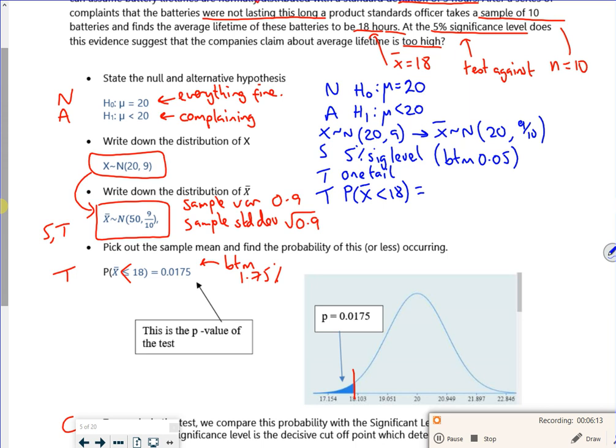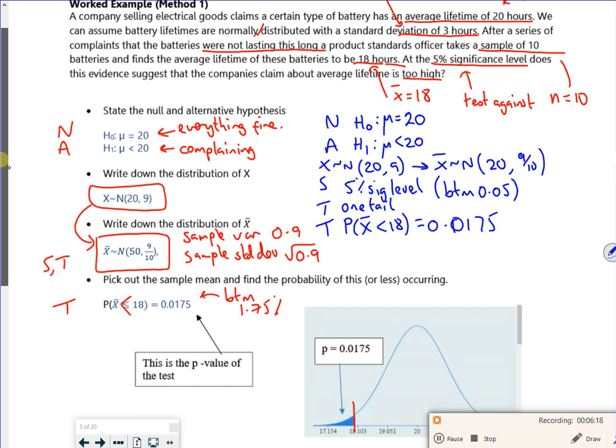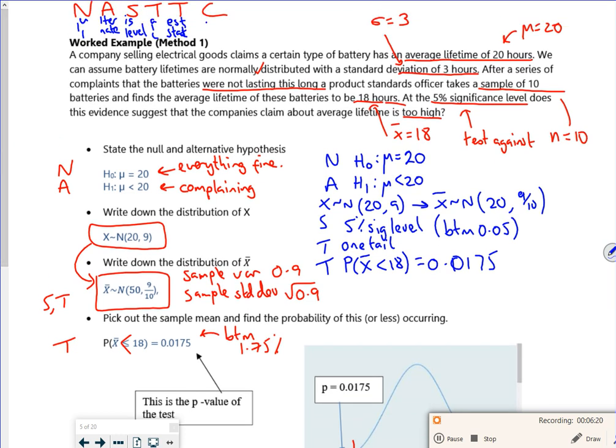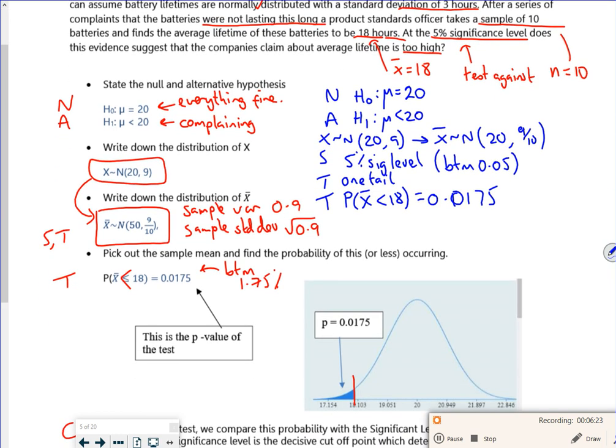And then the last bit is my conclusion. So my conclusion would be that 0.0175 is less than 0.05. Therefore we reject H0. So what I'm saying is that it's far enough away from the 20 for me to feel that there's an issue. And the way I write this out is there is sufficient evidence at the 5% significance level. So this is my conclusion part still.